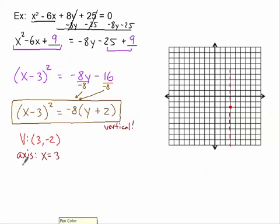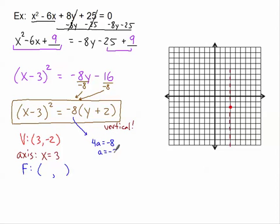Let's find the focus. The focus is going to be an ordered pair — it is the point that is exactly a units away. So I take 4a equal to negative 8, and find that a is negative 2. That negative 2 is going to force us to count downward 2 units. So there's my focus, and this time we're going to be opening downward.